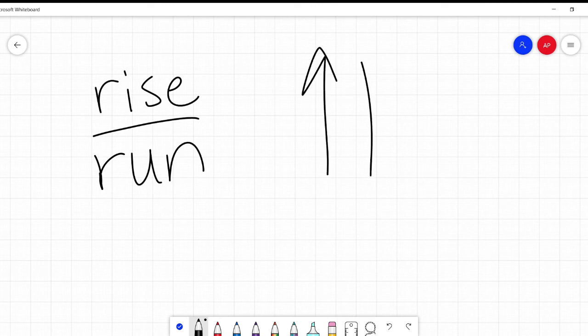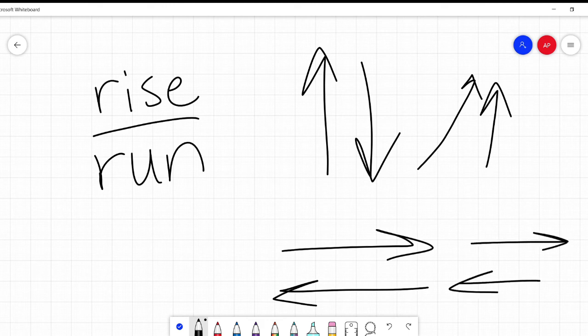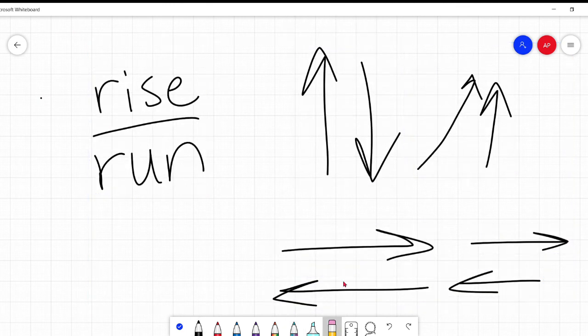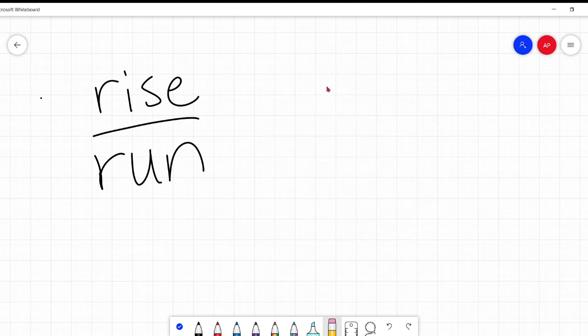You'll see it referred to as rise over run. How much up or down it's going, rising, over how much the line is going left or right, or running. Like you're rising in an airplane or a balloon, you're going up or down. And if I'm running, I am going left to right. I am not generally running up into the air.